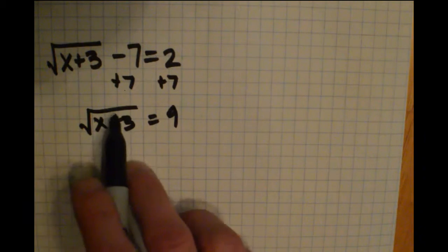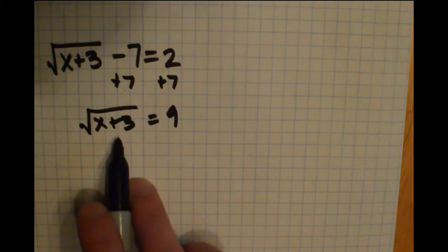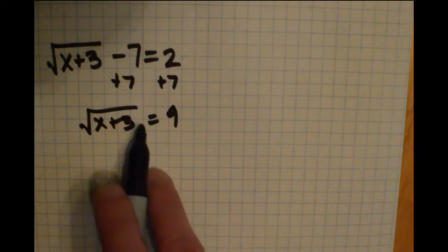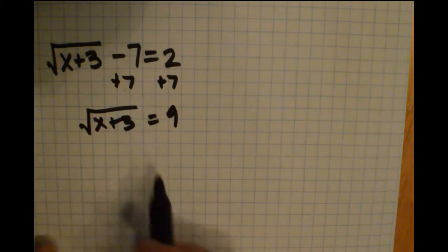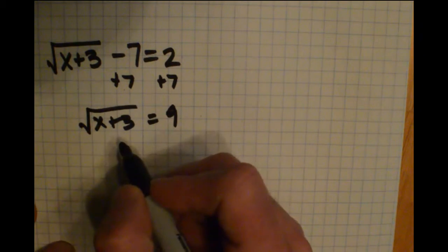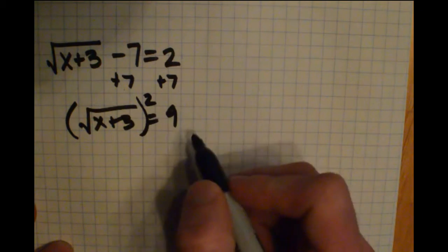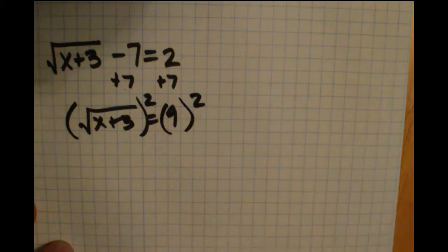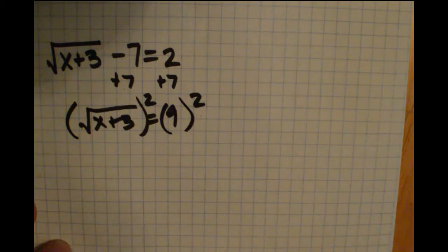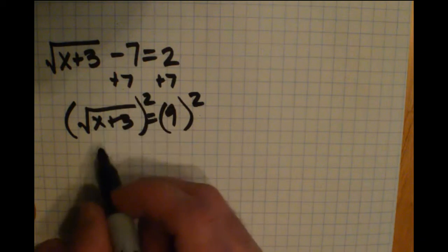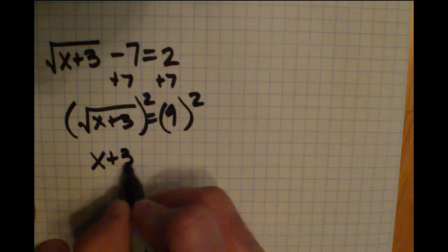Now what I want to do is get rid of that square root. I can't do anything with a plus 3 right now because it's sort of trapped in that radical. So I want to get rid of that square root first by doing the inverse. So I'm going to take that whole side and I'm going to square it. Anything I do to the left side I have to do to the right side. So I'm going to square the left side. Square cancels out the radical and I have x plus 3.